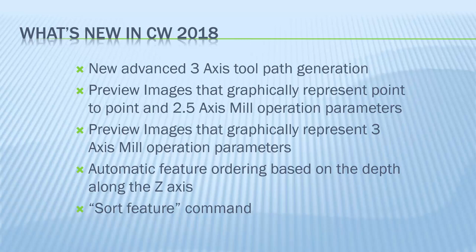We also have a lot of new preview images. Before, the images in the menu were static. Now all images are dynamic and every time you click an option or a function you will see the image showing you what that function actually does. This is true for 2.5-axis mill and also for 3-axis milling — whatever option you click, you will see a dynamic preview image showing what that function would actually do. This is a great enhancement to the user interface.